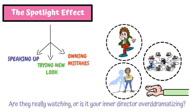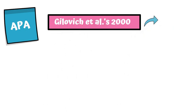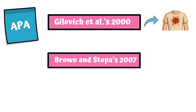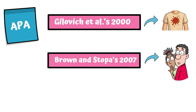For the curious, here are key references in APA style. Dive deeper into Gilovich et al.'s 2000 experiments on t-shirt trials, and Brown and Stopa's 2007 work tying it to anxiety. Full details on the board now.